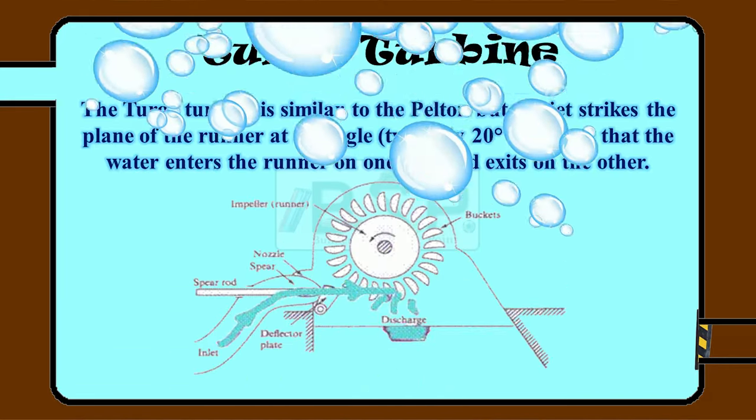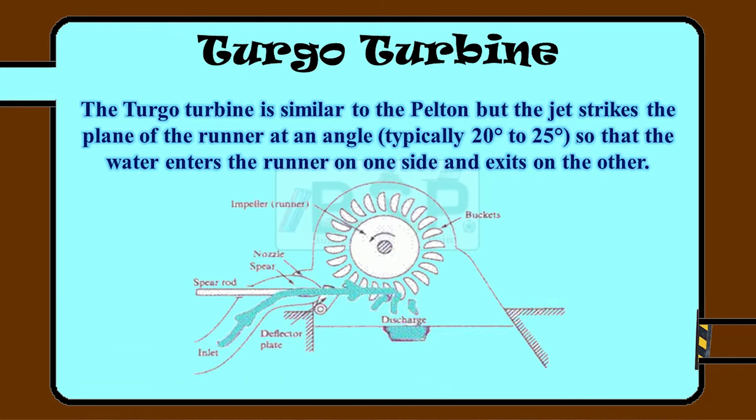Next, we will see the Turgo turbine. The Turgo turbine is similar to the Pelton, but here the jet strikes the plane of the runner at an angle — typically 20 to 25 degrees — so that the water enters the runner on one side and exits on the other.